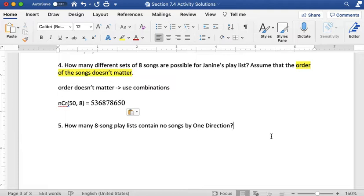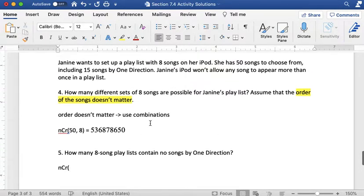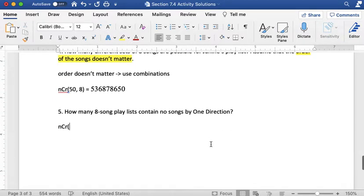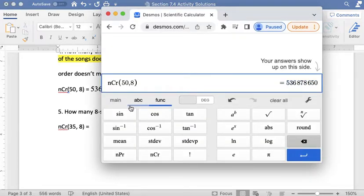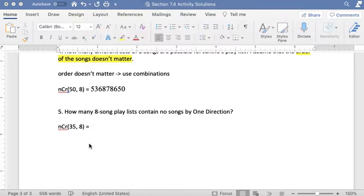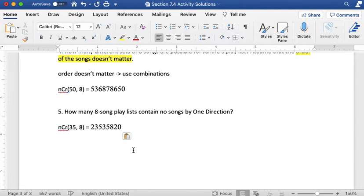And then the last question is, how many 8 song playlists contain no songs by One Direction? So again, we're using a combination. Now we're still making an 8 song playlist, but our total number of songs is no longer 50. It's going to be 35, because we're taking out those 15 One Direction songs. It's going to be nCr 35 comma 8, and then I'm going to do that on my calculator. And I see that's still quite a lot of possible playlists, over 23 million, but not as many as when I'm looking at the 50 songs that include the One Direction song. So if I have fewer songs to choose from, there's going to be fewer possible playlists.